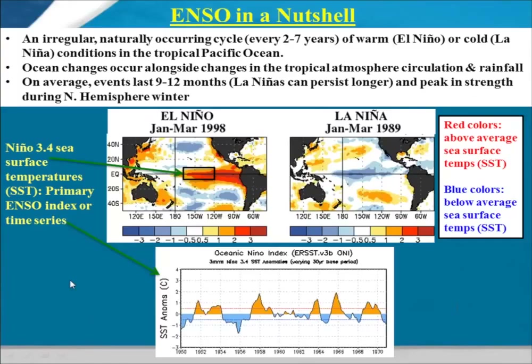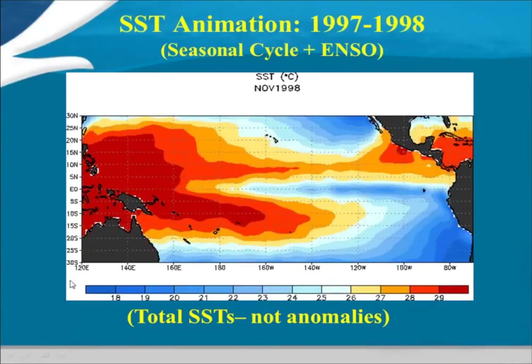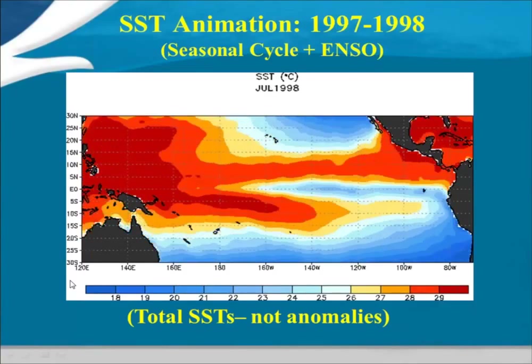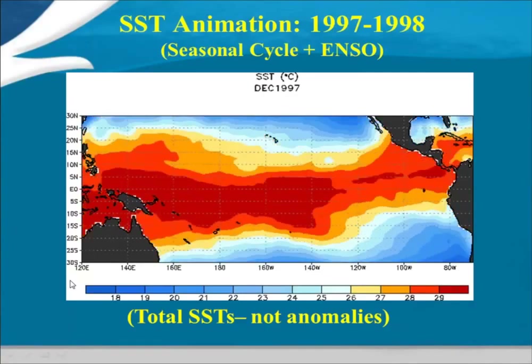It's important to keep in mind that the ocean and the atmosphere change together — it is associated with changes in circulation and rainfall. Our official index is for sea surface temperatures, the departures from average in what we call the Niño 3.4 region. You can create an index that tracks ENSO changes. That region is selected because it has fairly strong coupling with the atmospheric circulation in the tropical Pacific.